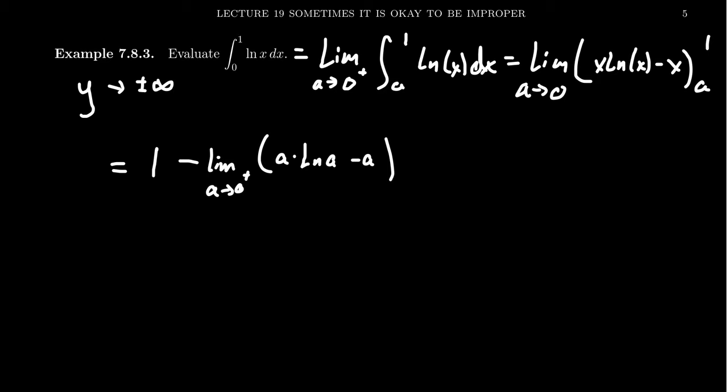And so, this a times the natural log of a, this is going to have the indeterminate form 0 times negative infinity. This is the indeterminate form 0 times infinity. The negative a is just going to disappear because it will just go off towards 0.